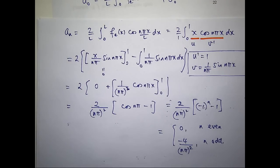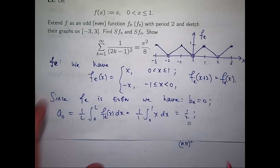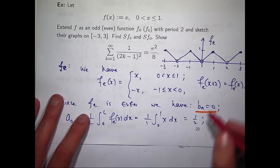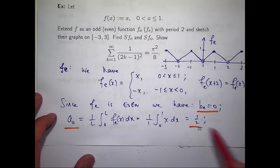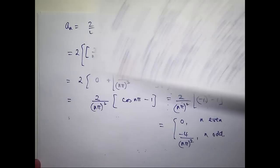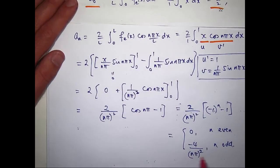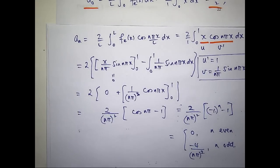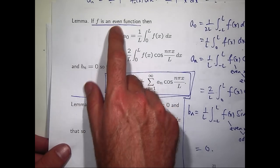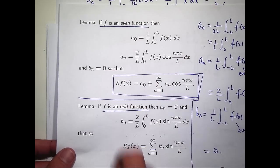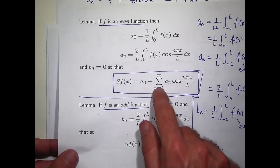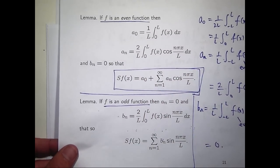Let's recap our Fourier coefficients. Because our function is even, the bₙ's are all zero. We've calculated a₀ = 1/2. After the integration, aₙ = 0 when n is even, and aₙ = −4/(nπ)² when n is odd. Since we're dealing with an even function, all bₙ's are zero, so we expect a series only involving cosines — this is sometimes called a Fourier cosine series.